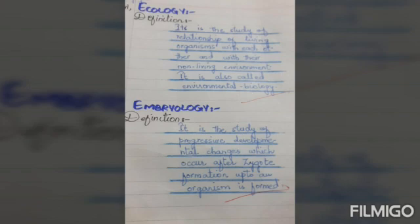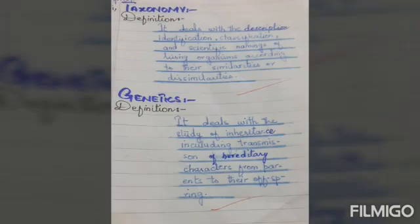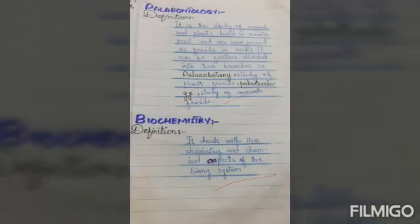Next is Embryology. Write down its definition: it is the study of progressive developmental changes which occur after zygote formation up to when an organism is formed. Next — Genetics: the study of heredity, including transmission of hereditary characters from parents to their offspring.